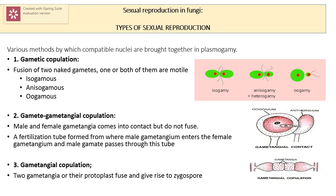The second category is gametangial contact. In many phycomycetes, sexual reproduction is affected by gametangial contact. A gametangium is the structure in which gametes are formed. The male and female gametangia come in contact, a pore is produced at the point of contact, and the male gamete passes through the pore into the female gametangium where it fertilizes the eggs or oospores to produce diploid oospores. A fertilization tube from the male gametangium enters the female gametangium.